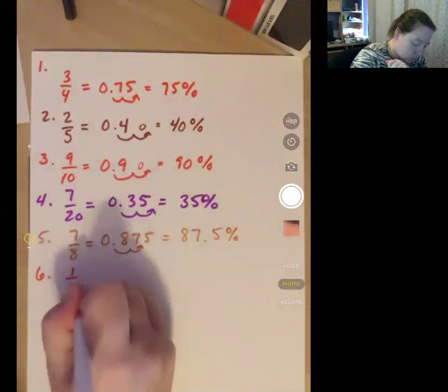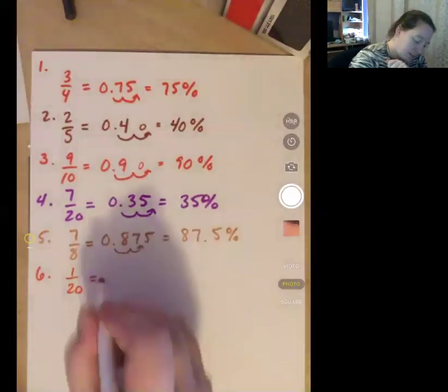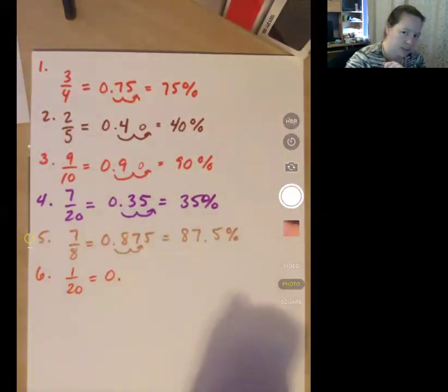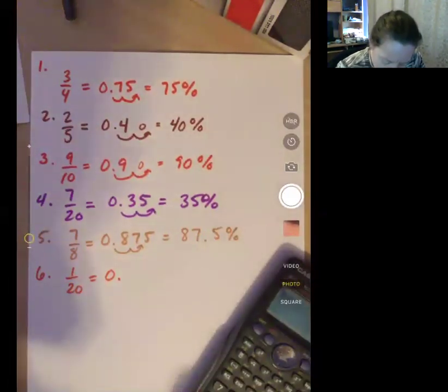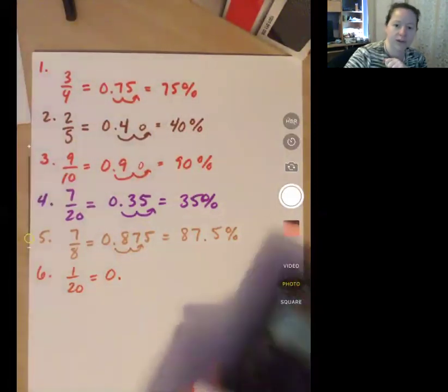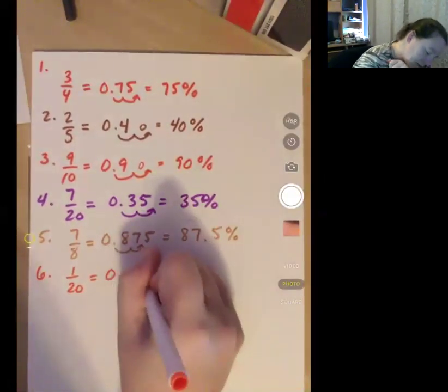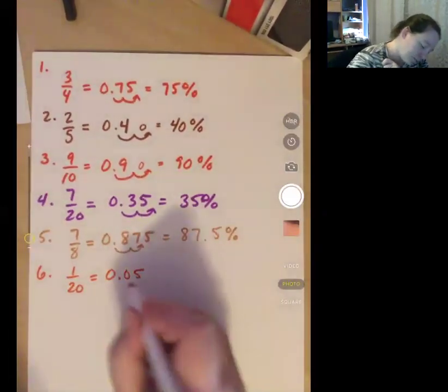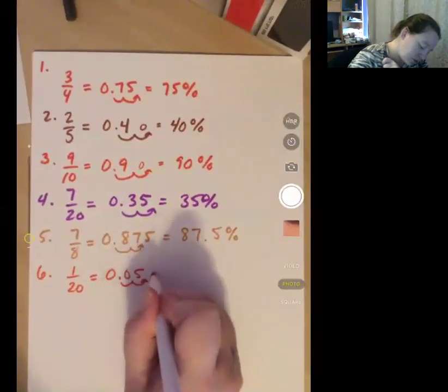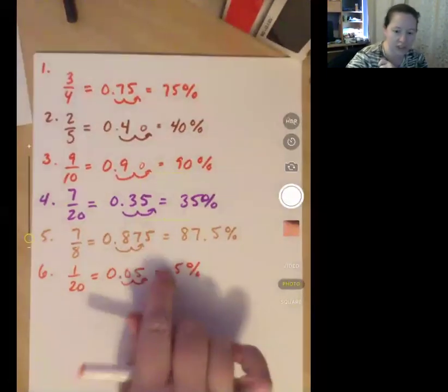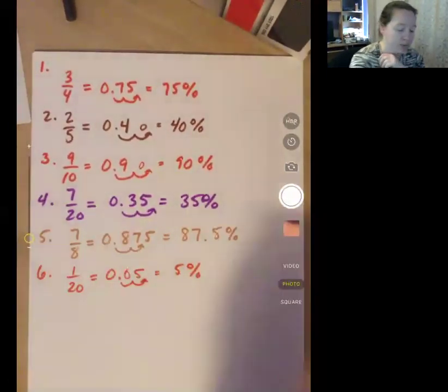Number six, one twentieth. One divided by 20. Zero point zero five. Move it twice. One, two, and it becomes five percent. I no longer need that zero in front of it, so it's just five percent.